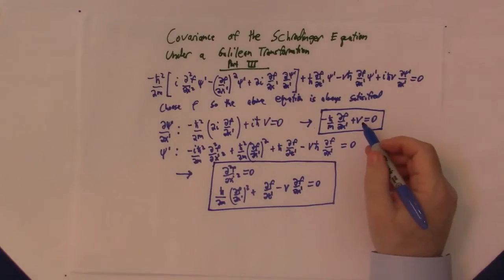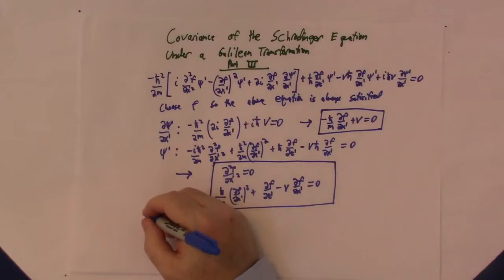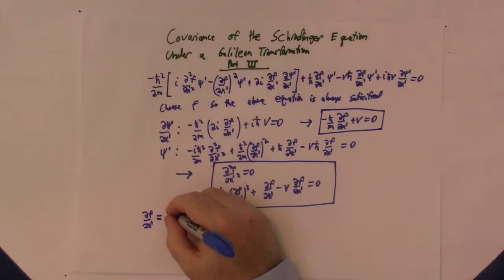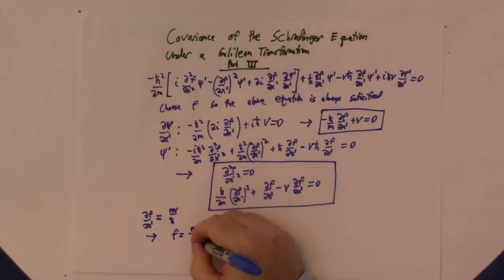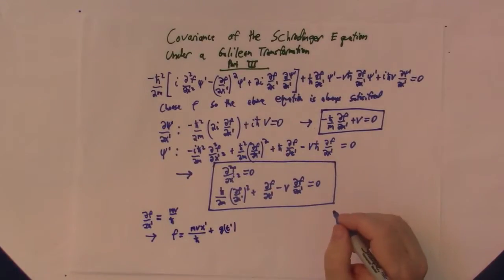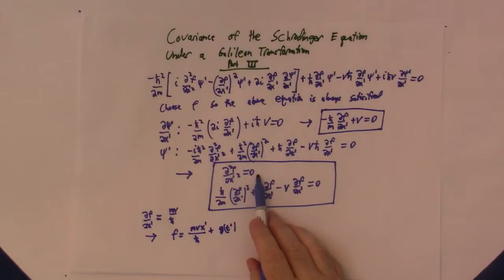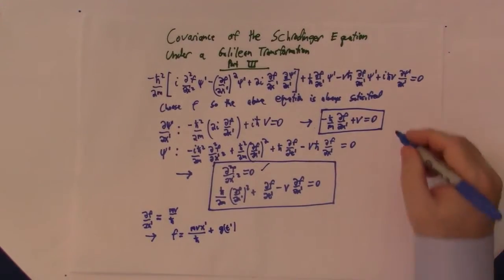Now let's go back to this equation. This is an easy equation to solve. We'll get partial of f with respect to x prime equals mv over h bar. So this implies that f is equal to mv x prime over h bar plus some unknown function of t prime. And notice that this function of f automatically solves this equation. The second derivative of f with respect to x prime, this vanishes, and g only depends on t prime, so this vanishes. So just by solving the first equation, we've already solved this equation.